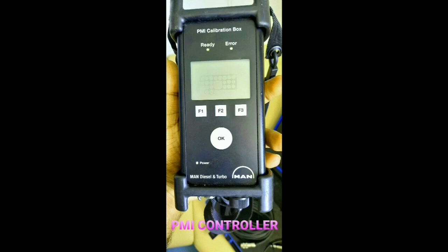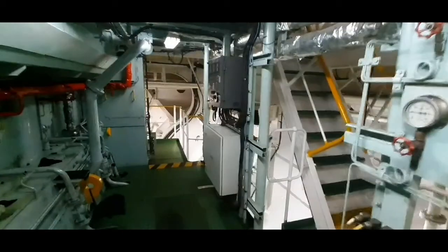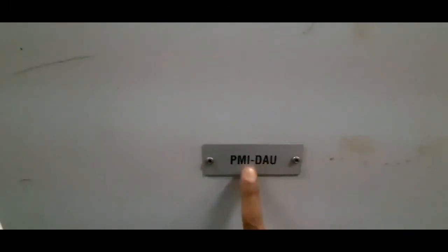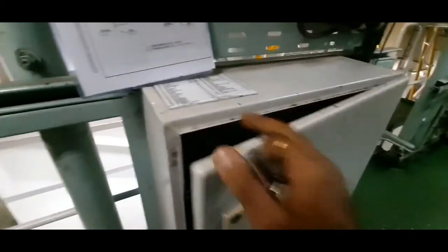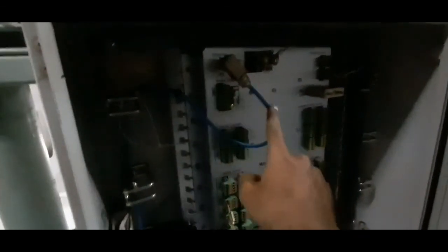The transducer is connected to the PMI controller. Your vessel will be installed with a PMI DAU, that is Data Acquisition Unit, on both the online and offline systems. The data from the pressure transducer is transmitted to PMI DAU. Now the ethernet cable further conveys all the data to the PC in the engine control room.